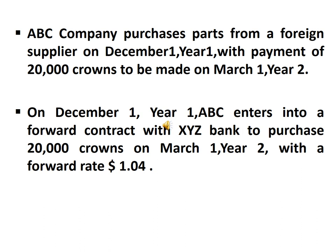The company needs to manage its exposure to the risk of fluctuation in foreign currency. So on December 1st, Year 1, APC enters into a forward contract with XYZ Bank to purchase 20,000 crowns on March 1st, Year 2, with a forward rate of $1.04.